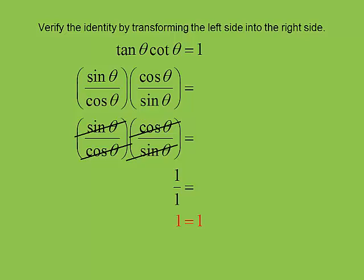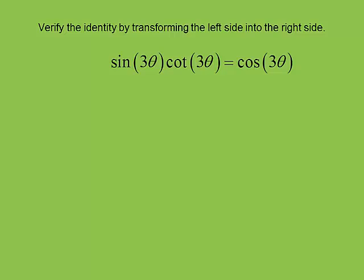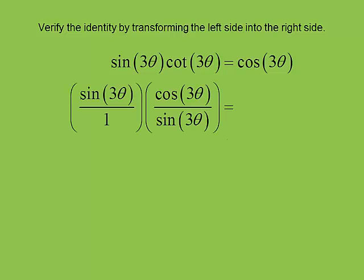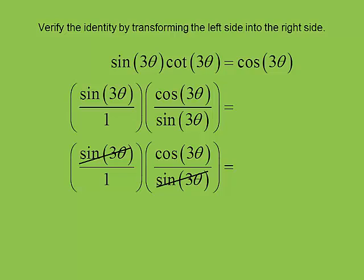Let's do another one: sine(3θ) times cotangent(3θ) equals cosine(3θ). Don't let the threes bug you out — they just go along for the ride. I write sine(3θ) as sine(3θ) over 1. Cotangent is cosine over sine, and the three-thetas just go along for the ride. The sine(3θ) terms cancel out, and we're left with cosine(3θ) equals cosine(3θ). I went straight down the page, turned everything into sines and cosines, did basic fraction multiplication, and got the left side to look just like the right side.